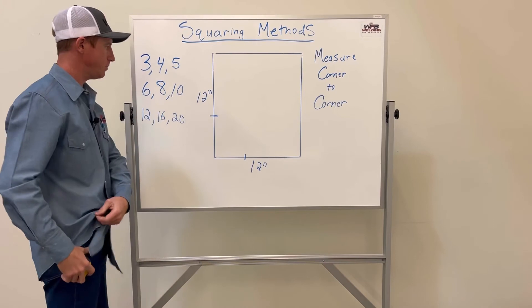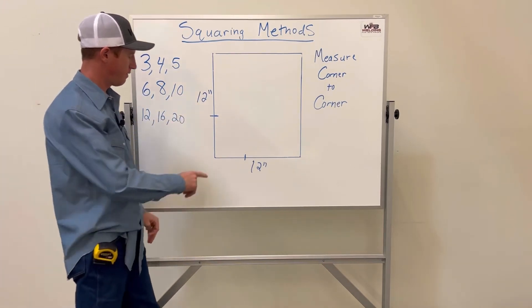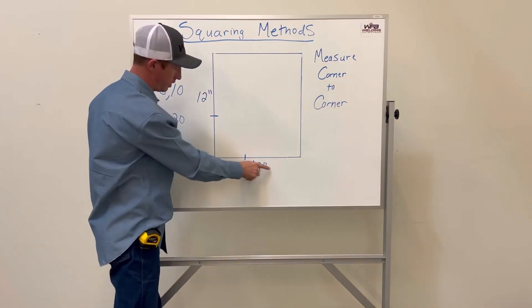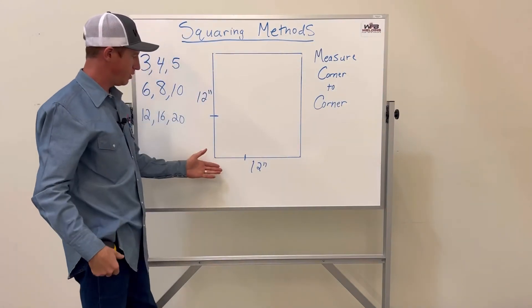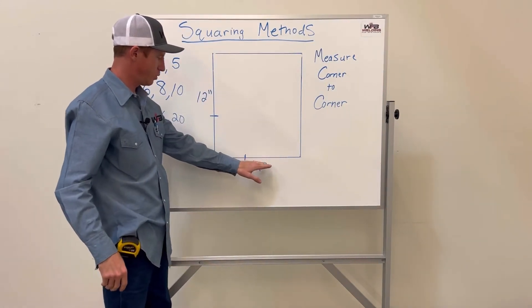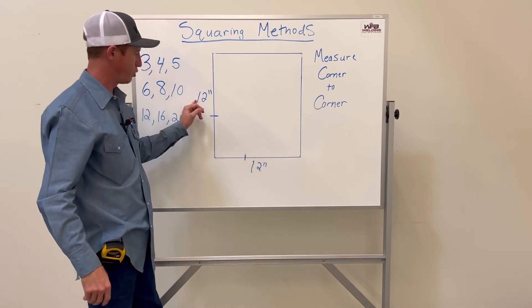What I would do once I figured out these two lines to make that 90—say that this was a 12 inch by 12 inch square that you're building.